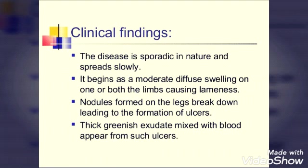Nodules formed on the legs break down leading to the formation of ulcers. These nodules slowly get broken down and form ulcers on those regions. Then thick greenish exudate mixed with blood appears from such ulcers. When those ulcers are formed, you can find a thick greenish fluid coming out through the ulcers. That is the sign of lymphangitis.